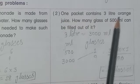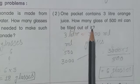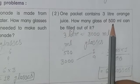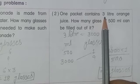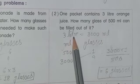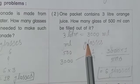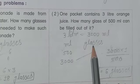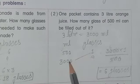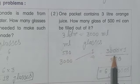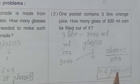Second sum: one packet contains 3 liter of orange juice. How many glasses of 500 milliliter can be filled from it? First, convert 3 liter to 3000 milliliter. Then, 3000 divided by 500 equals 6. So the answer is 6 glasses. Second sum completed.